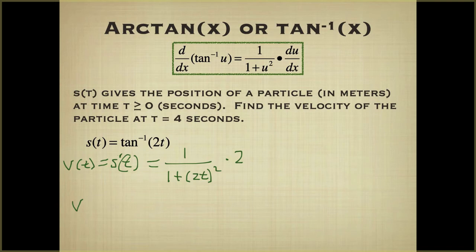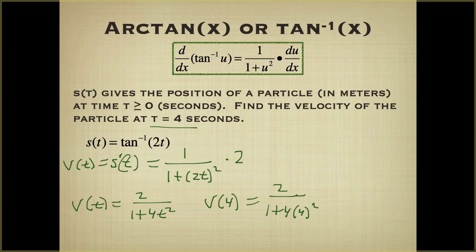So I'm just going to make this look a little better. So v of t is 2 over 1 plus 4t squared. Now it says we want to find out what's happening at t equals 4. We're going to plug in and solve v of 4. So we have 2 over 1 plus 4 times 4 squared. And when you do this, you get 2 over 1 plus 64, which is 65.